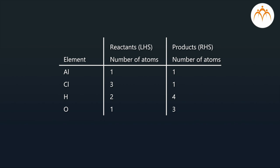Al has one atom on both sides. Cl has three atoms on the reactant side but only one on the product side. H has two atoms on the reactant side but four atoms on the product side. O has one atom on the reactant side but three atoms on the product side.